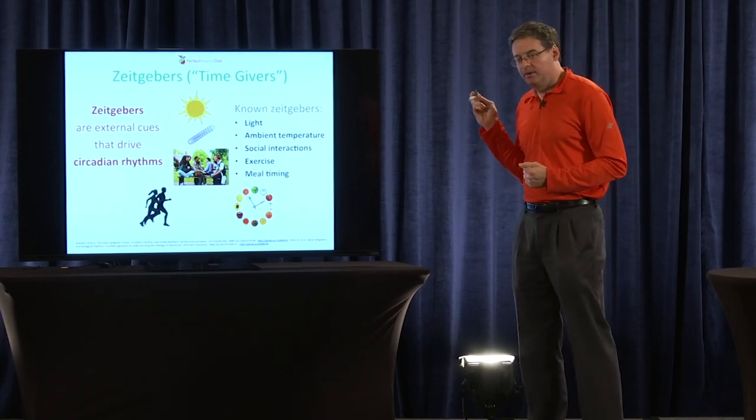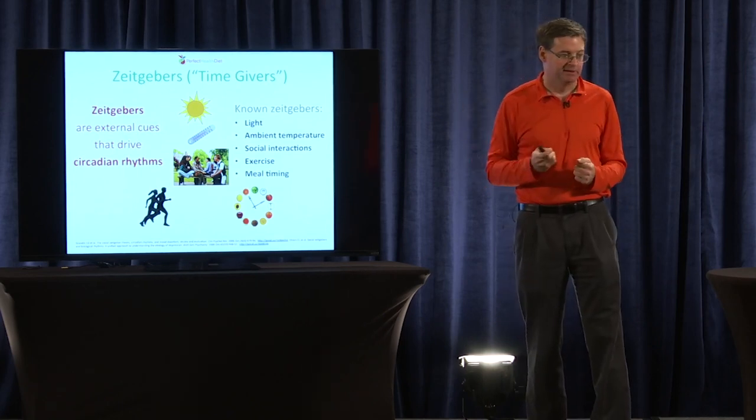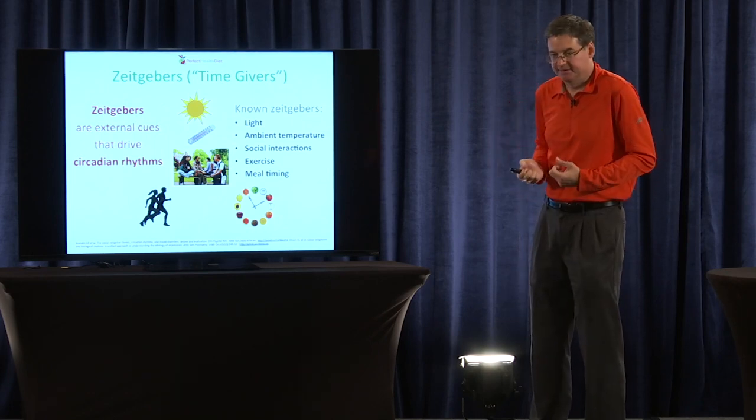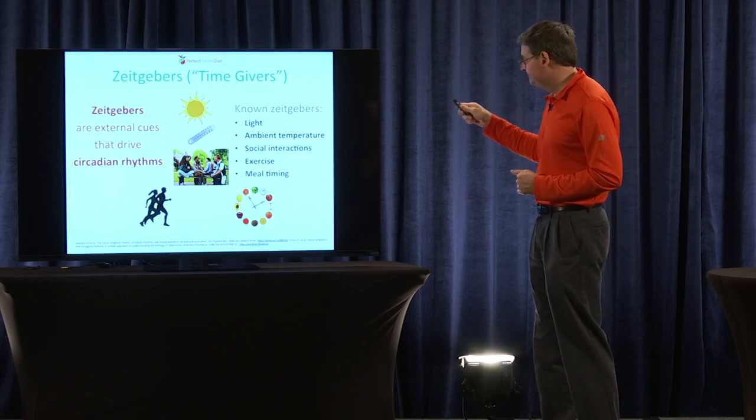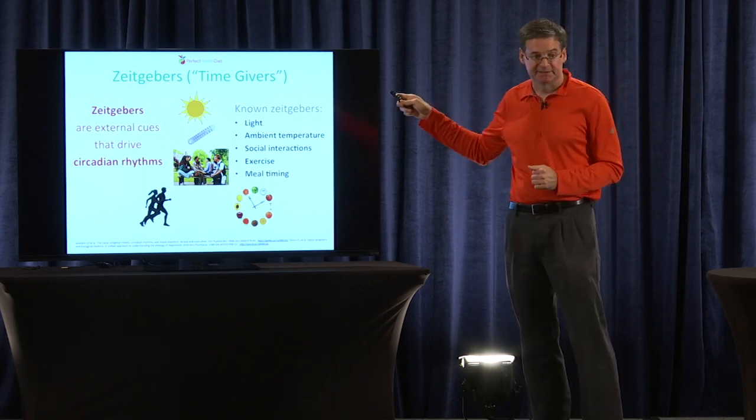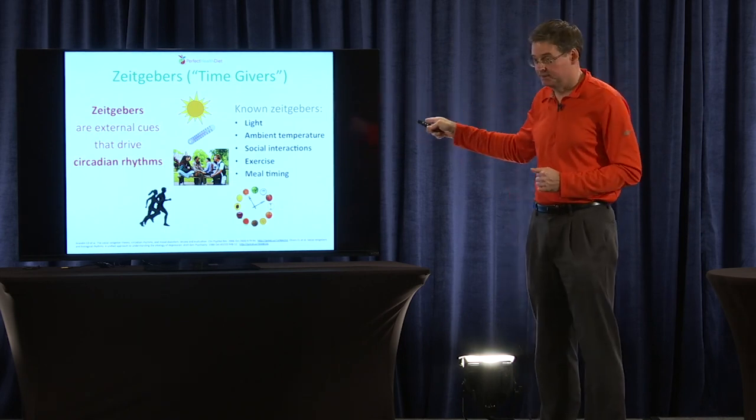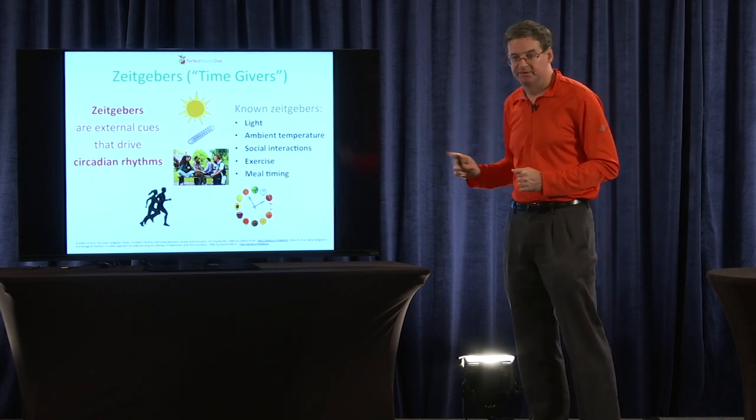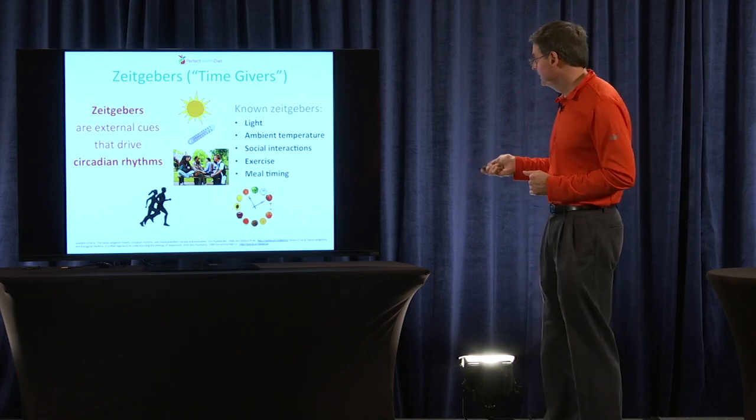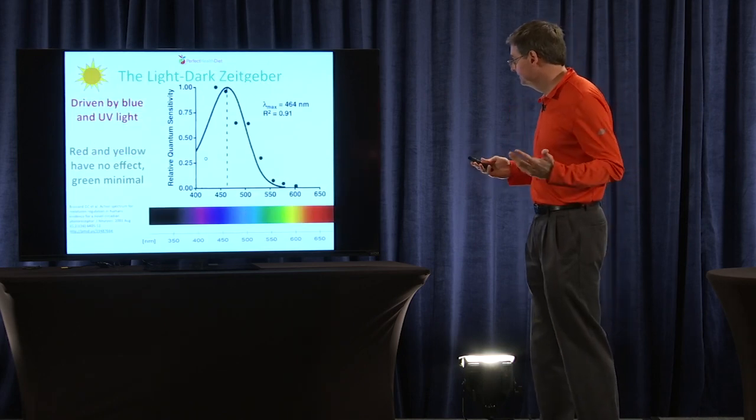How do we give time to those clocks? How do we get all the clocks ticking and all of them synchronized? Well, there are five main ways. One of them is light exposure. One is exposure to ambient temperature. One is through social interactions, one through exercise, one through meal timing. So let me talk a little bit more about each of those.